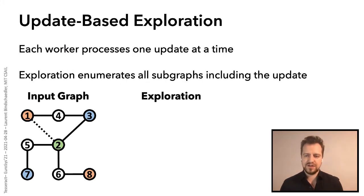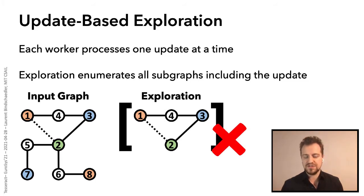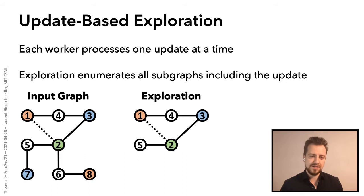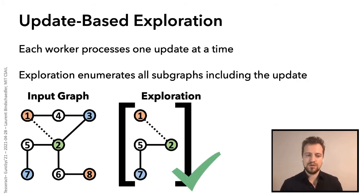So core to Tesseract is this update-based exploration approach. The idea is in fact quite simple. We want to process a single update at a time on a single worker and fully enumerate all subgraphs that include the update. So here, assume that the update is this edge between vertices one and two. The exploration process will start from this update and it will expand to enumerate all possible subgraphs that include this update. So here we would start by expanding with vertex three. We would find that this is a match. We would expand with vertex four. We would realize that this is no longer a match. And we would keep expanding. Here we wouldn't find anything until we backtrack. So then instead of expanding with vertex three, we would expand with vertex five and seven. And we would actually realize that this is also a match. And we would continue doing that until all matches have been found.